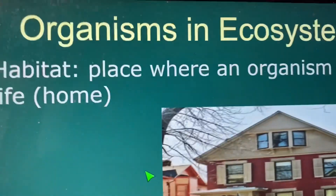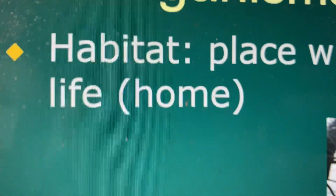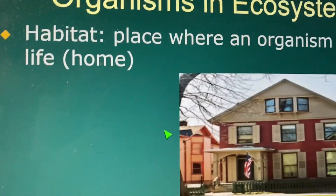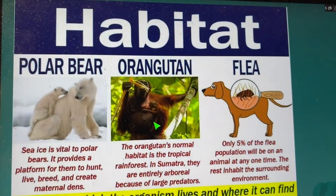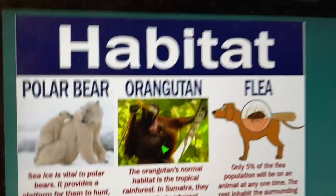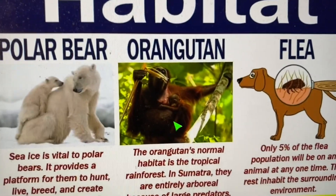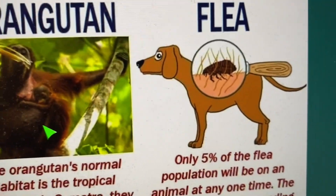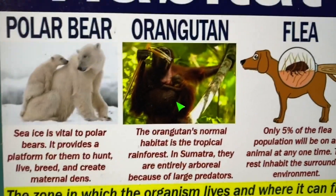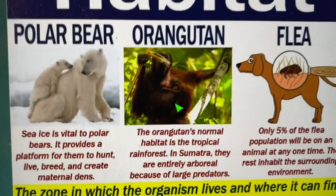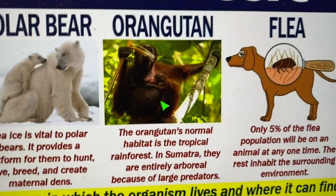Two words I want you to learn today or have by the end of the day. The word habitat — you probably know that. That's the place where an organism lives. It's where it finds food, water, and shelter. That's how we describe habitat. Sometimes habitat might even be on another animal, like a flea, for example. Habitat is the place where you find the three things that you need: food, water, and shelter.